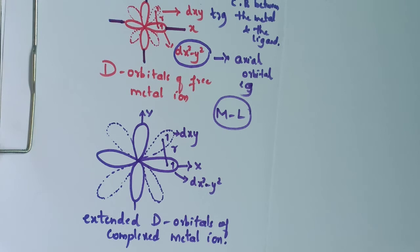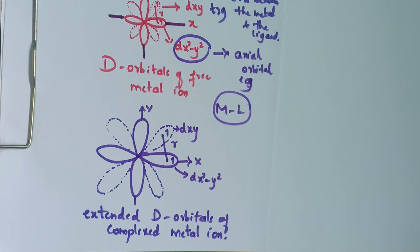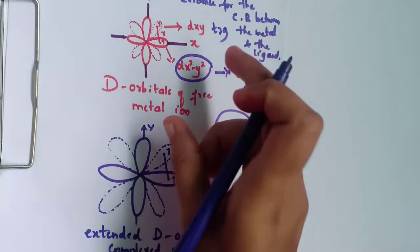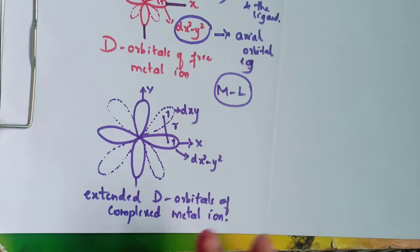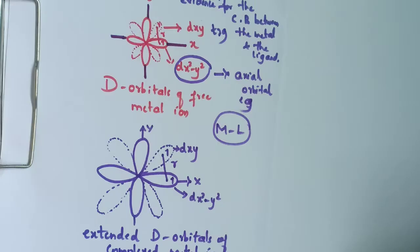Nephloxetic means cloud expansion. Before the approach of a ligand to form a complex, the d-orbitals are very small, but after the ligand approaches the metal to form a complex, the d-orbitals will be extended. This is the nephloxetic effect.